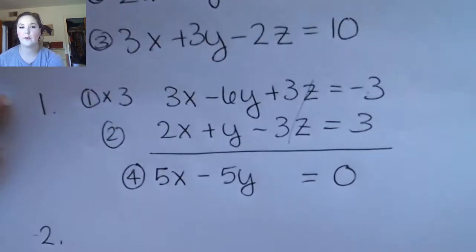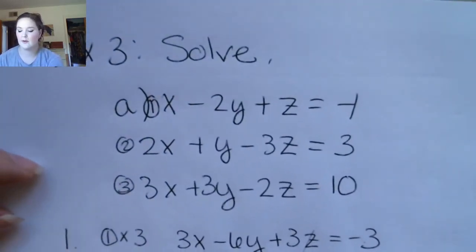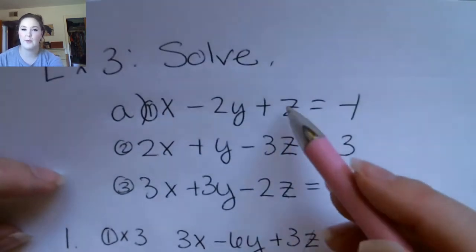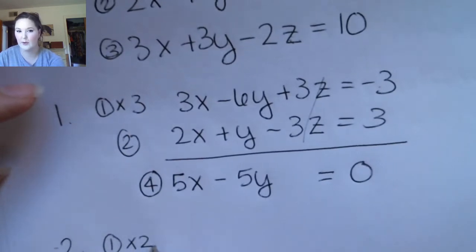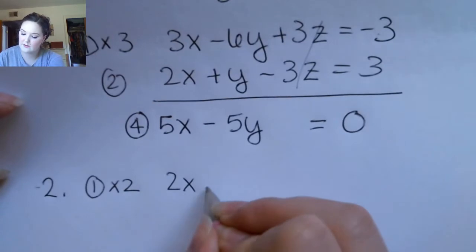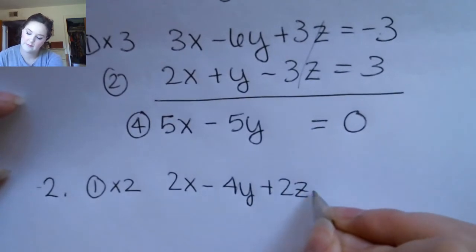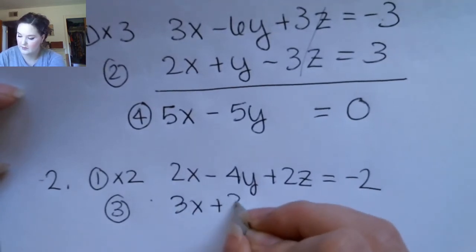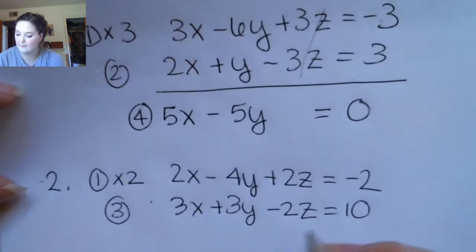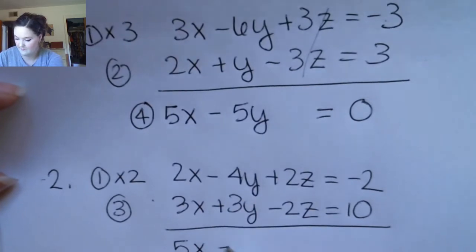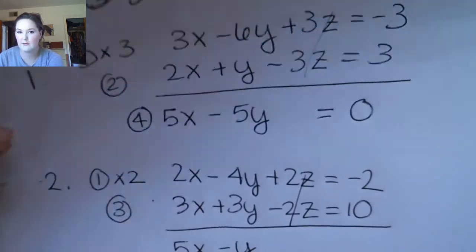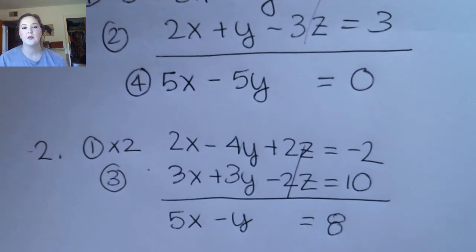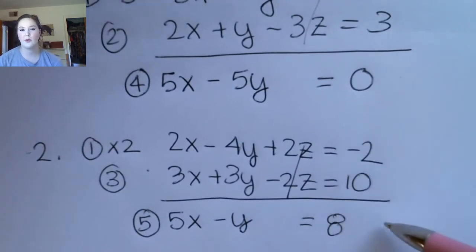In step 2, we're going to pick two other equations to eliminate z. Looking at our choices, here I would only have to multiply the first one, so I'm going to pick equations 1 and 3. I'll take my first equation and multiply it by 2, giving me 2x minus 4y plus 2z equals negative 2, then copy my third equation: 3x plus 3y minus 2z equals 10. When I add them together, the z terms cancel as planned, giving equation 5.